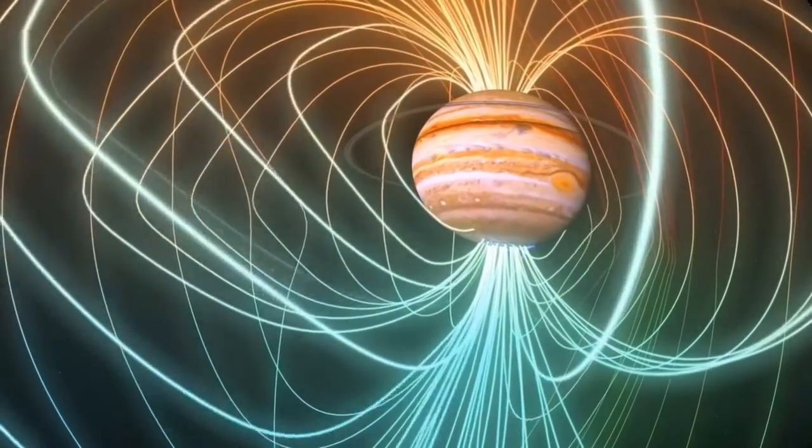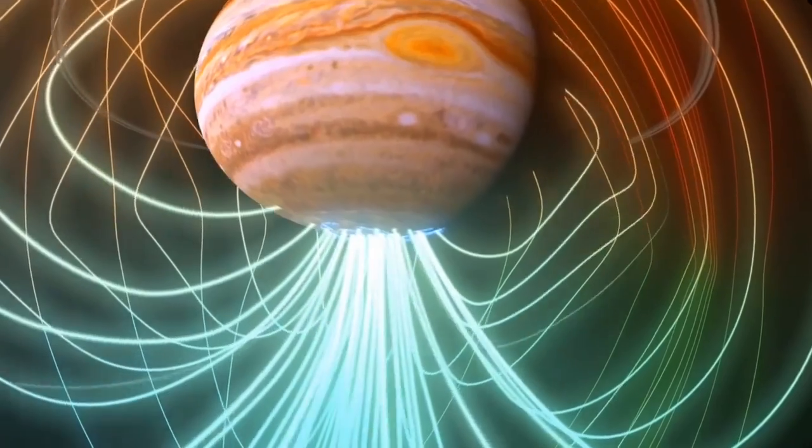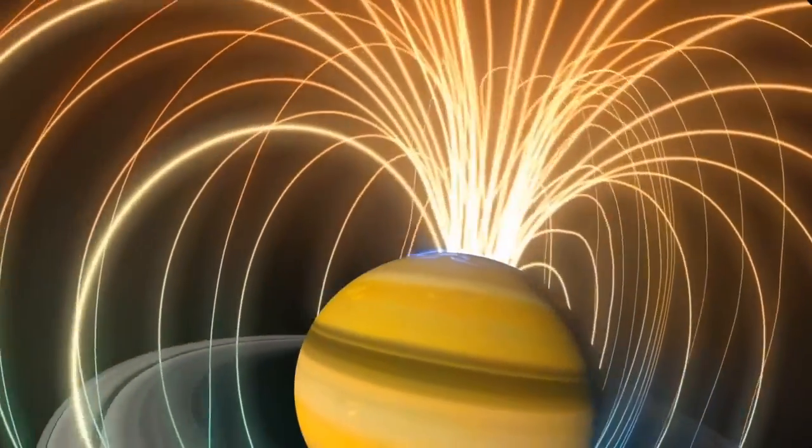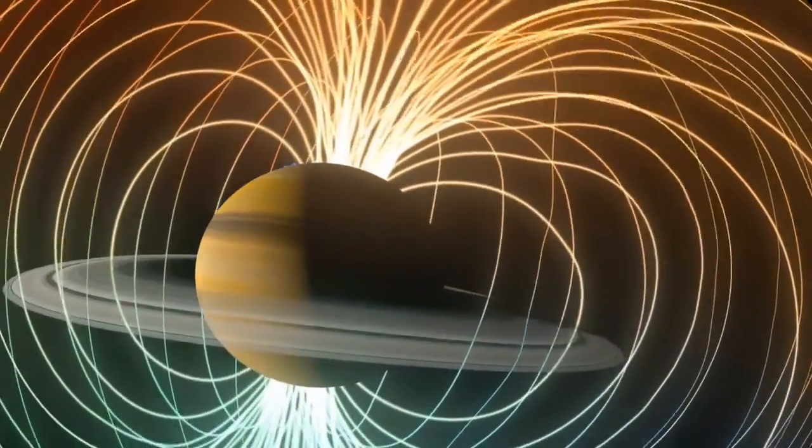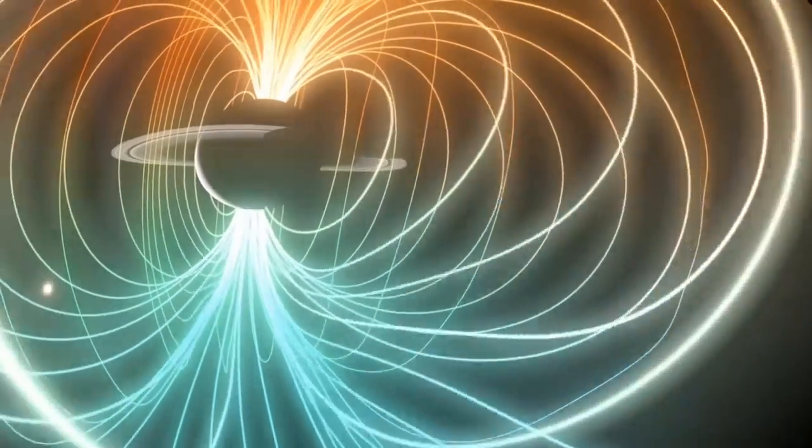Jupiter has metallic hydrogen flowing in its core, creating the dynamo to power a magnetosphere 20,000 times stronger than Earth's. Saturn has a smaller layer of metallic hydrogen than Jupiter's, and therefore a weaker magnetic field.